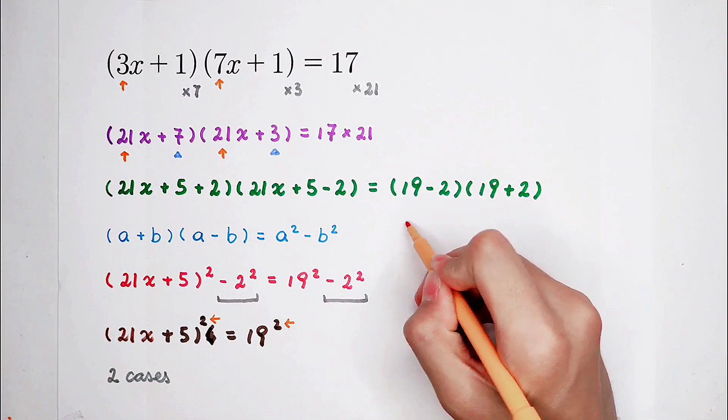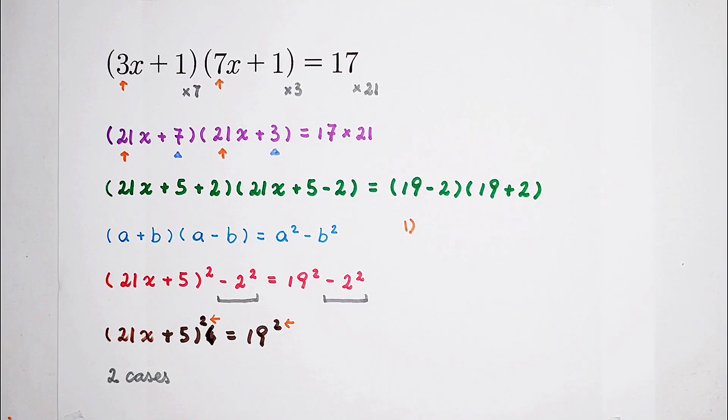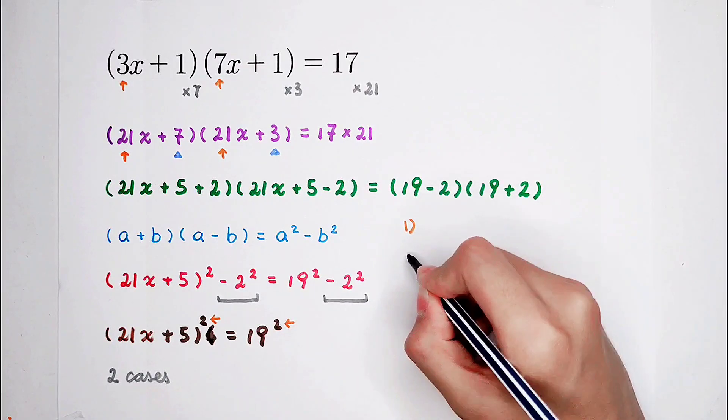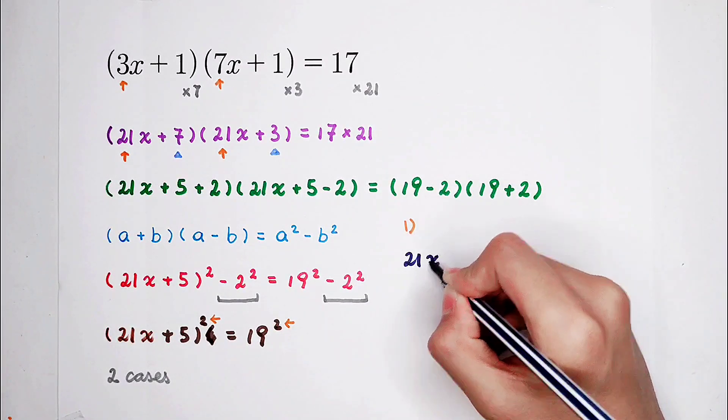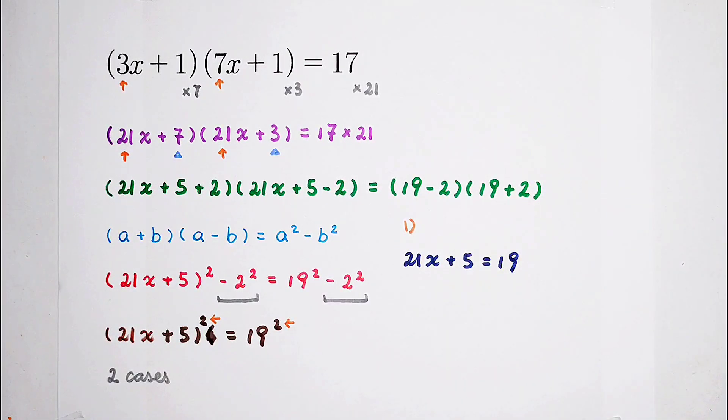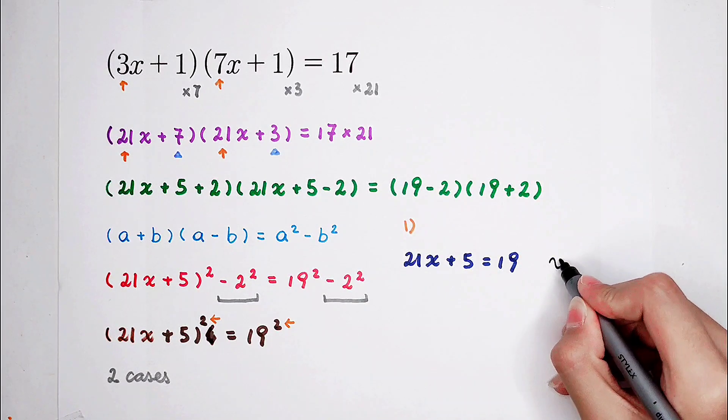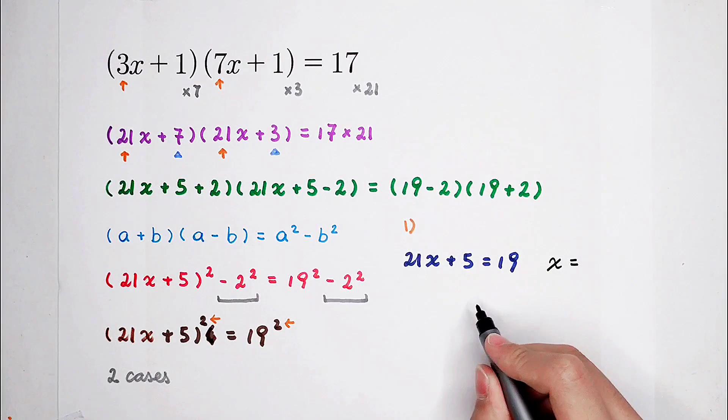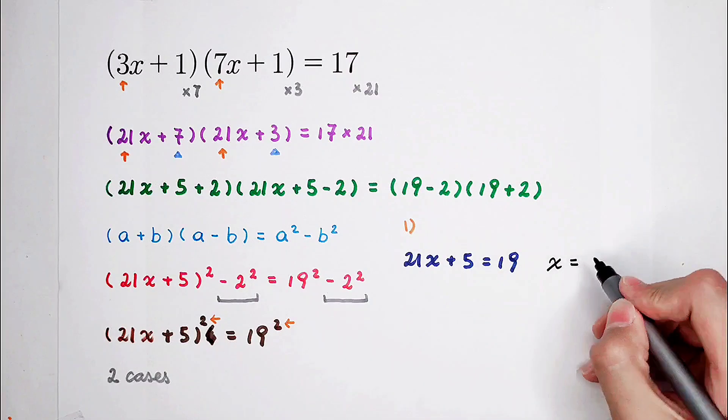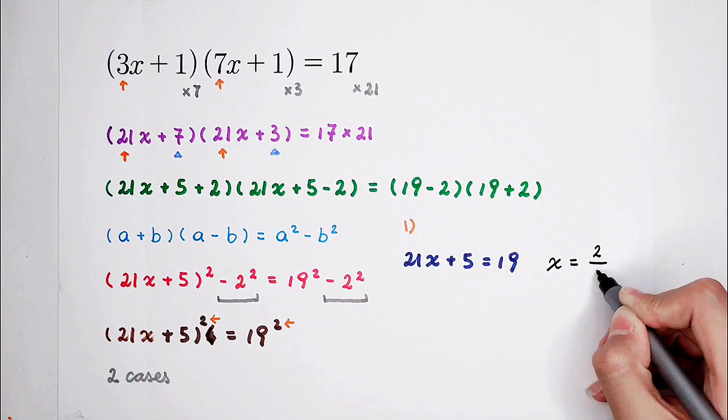For our first case, 21x plus 5 equals 19. Then the value of x can be evaluated simply, easily, and successfully. x is equal to 19 minus 5 is 14, 14 divided by 21. So that's 2 thirds.